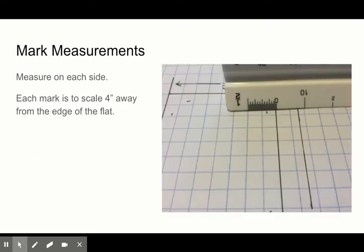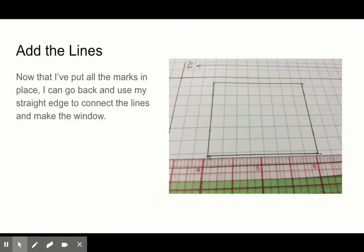So we're going to mark our measurements on each side four inches to scale away from the edge of the flat. And then we're going to add the lines. So we have straight edges now our window is appearing.